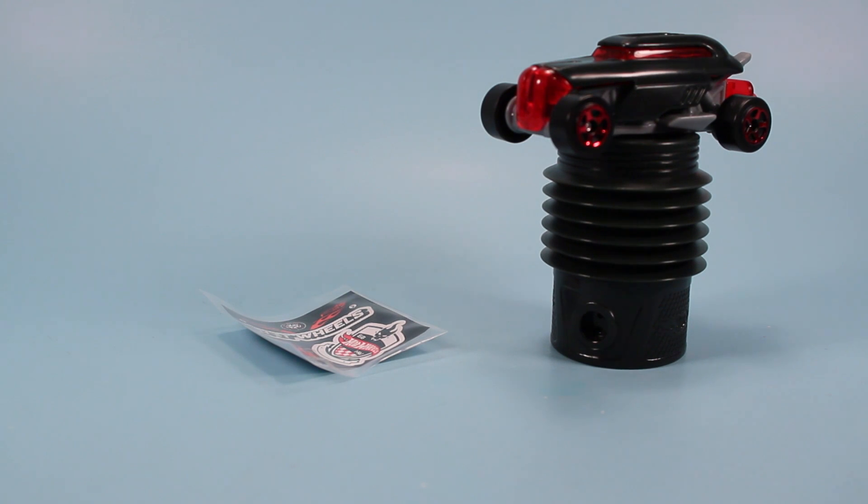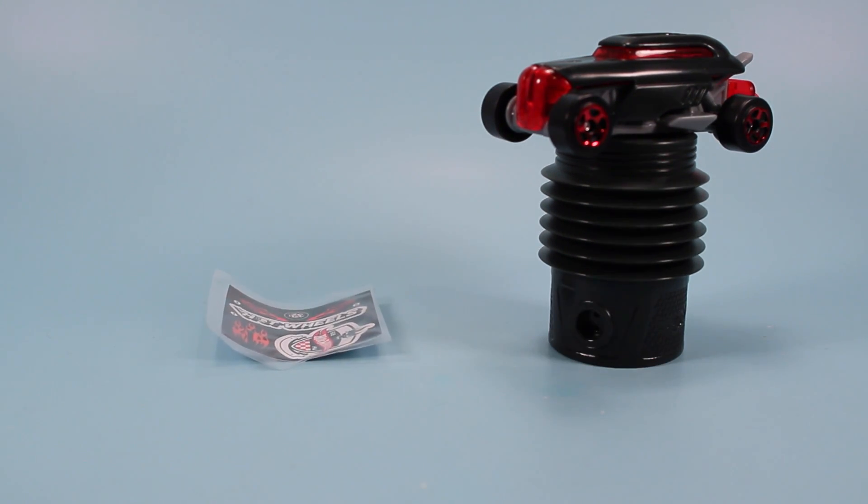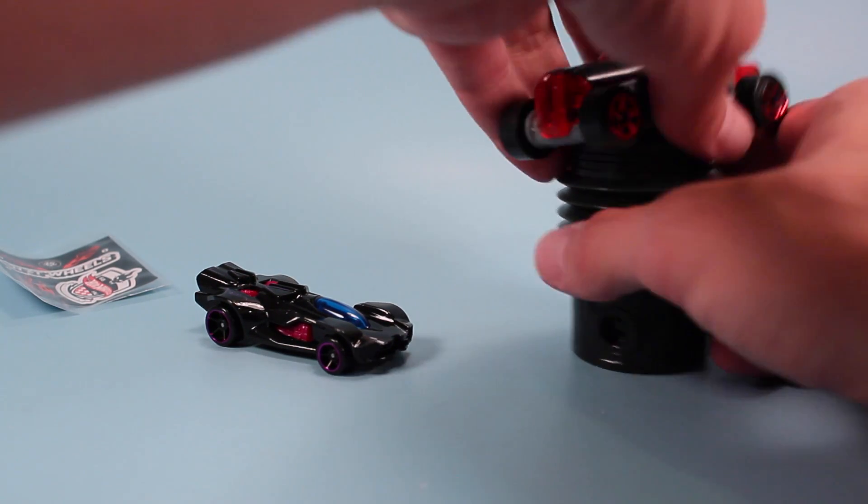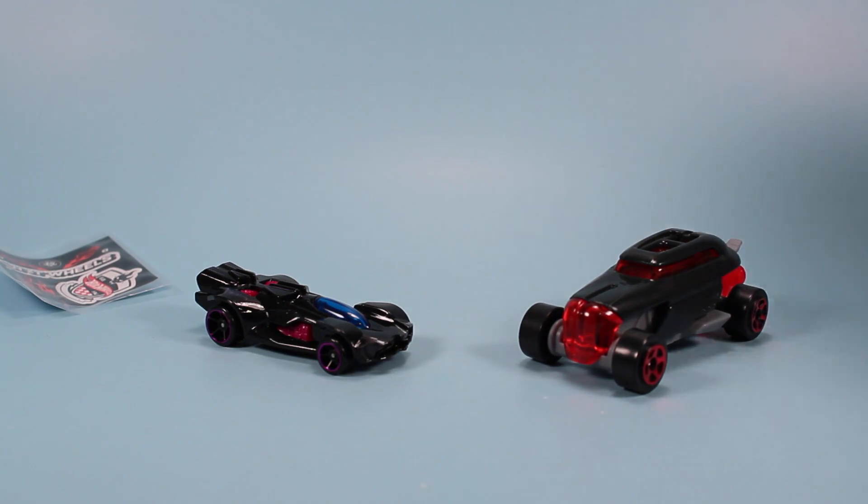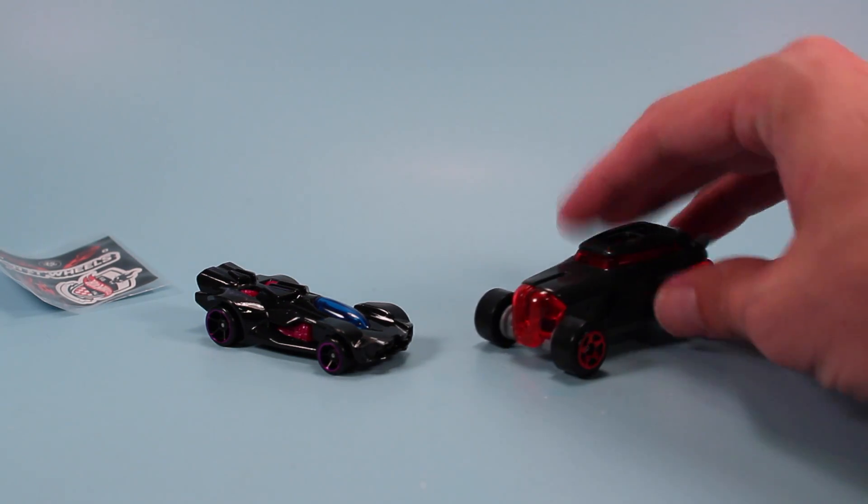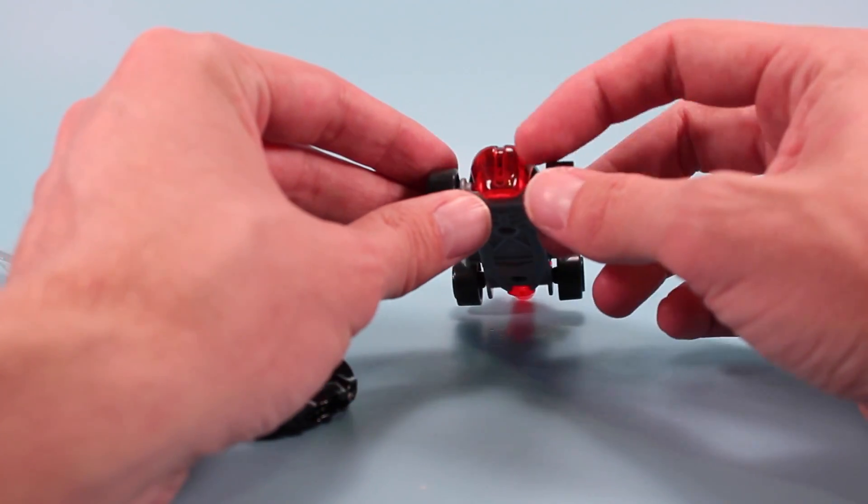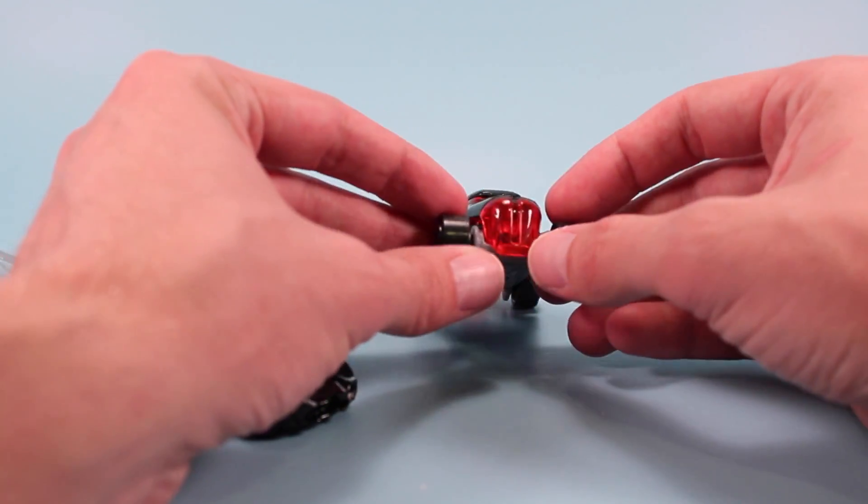Number 7 is the Rip Rod. Not to be confused with the Rev Rod here. This was a fun car I just picked up recently for the new Team Awesome Show. But this is the Rip Rod. Probably more of a classic. But for some reason I don't think I've ever seen it before. Some really nice going on with this car.